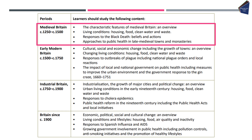Within the medieval Britain time period, there are four different things the exam board says you need to know: the characteristic features of medieval Britain — an overview of what life was like — living conditions including housing, food, clean water and waste; the responses to the Black Death, including beliefs and actions taken; and finally, approaches to public health in late medieval towns and monasteries.